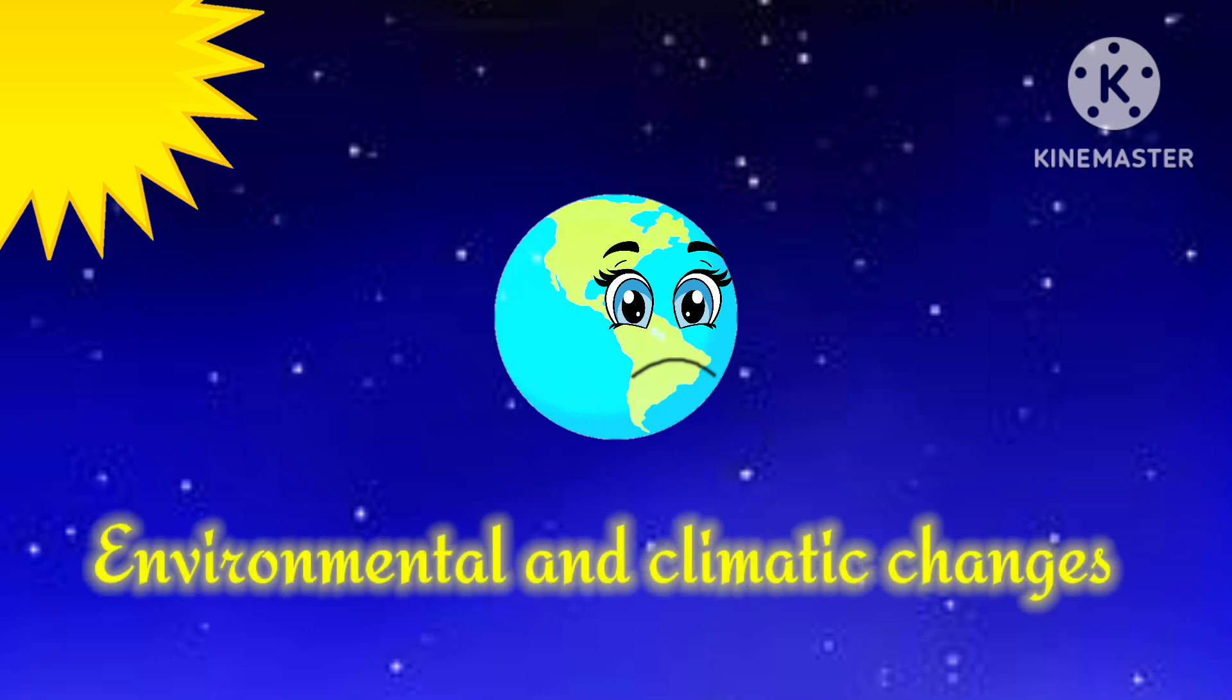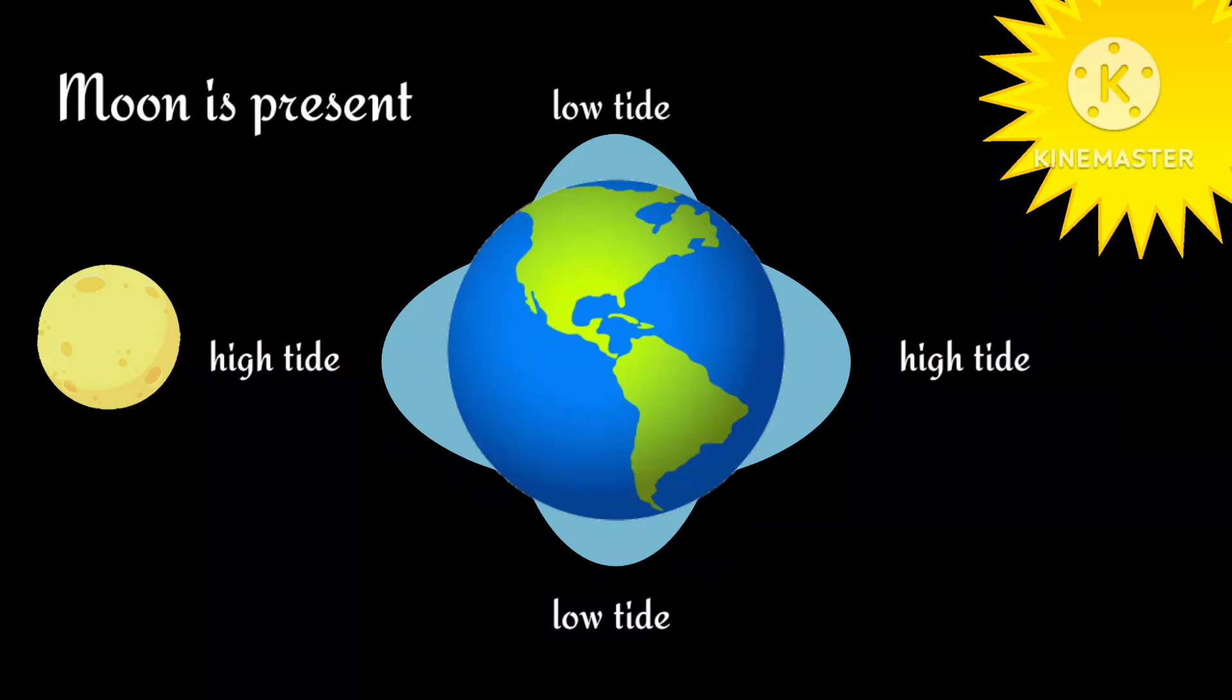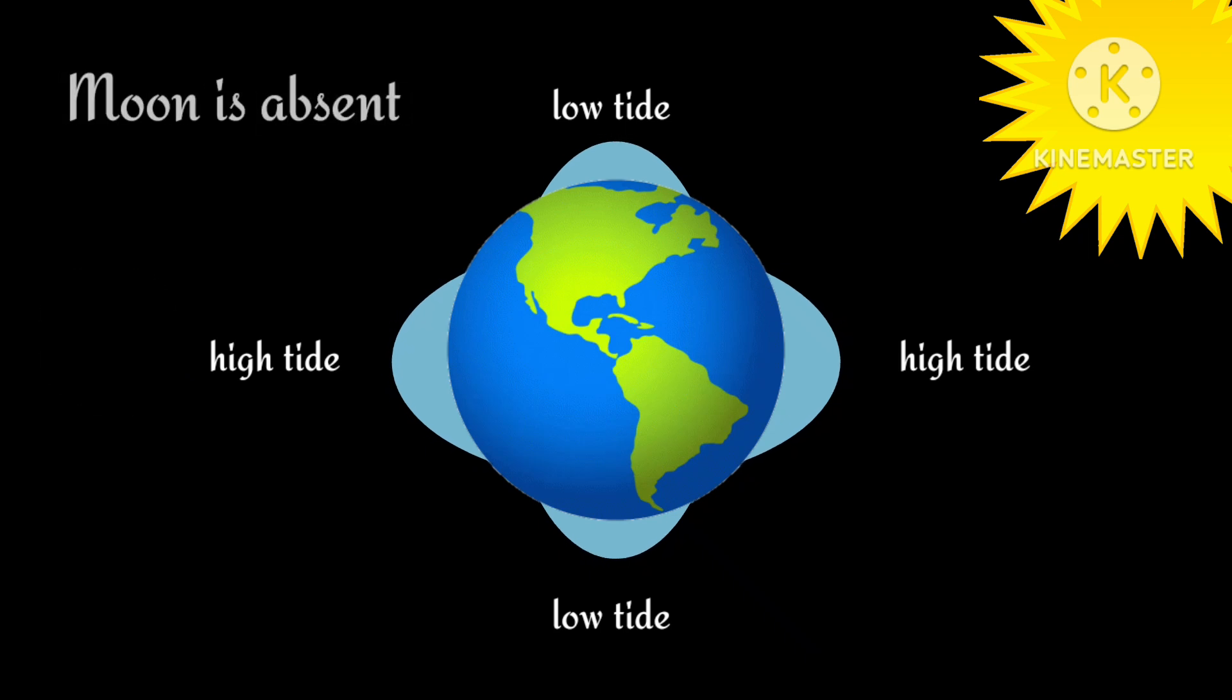Let's see what are its environmental and climatic changes. Tides would be reduced to about one-third of their current size, as only the sun's gravity would remain to influence them. This would lead to the collapse of coastal ecosystems.